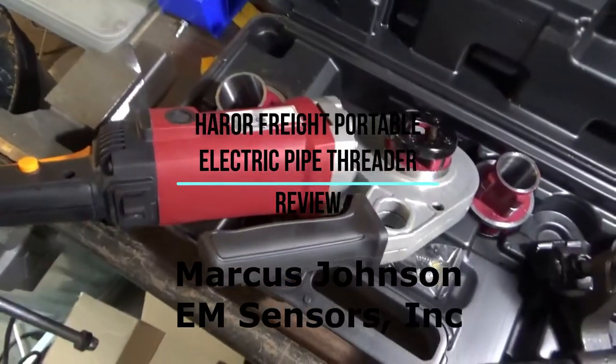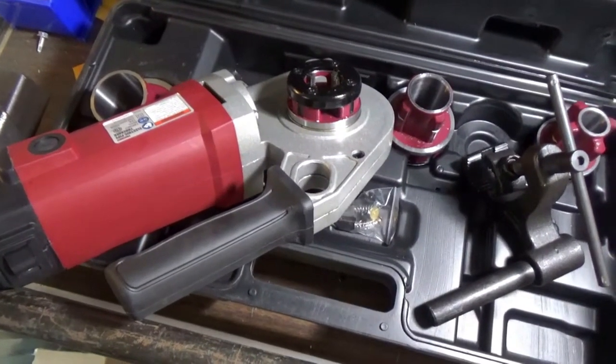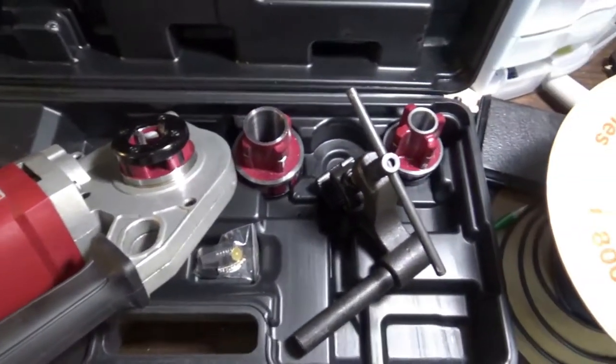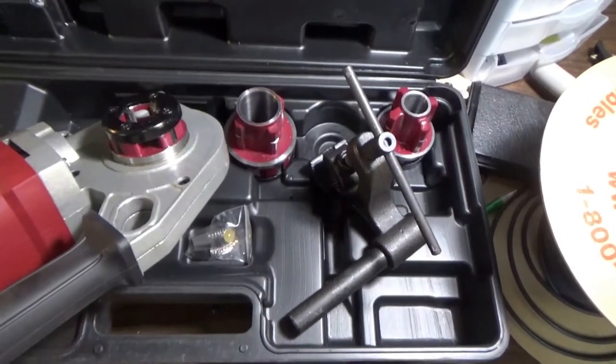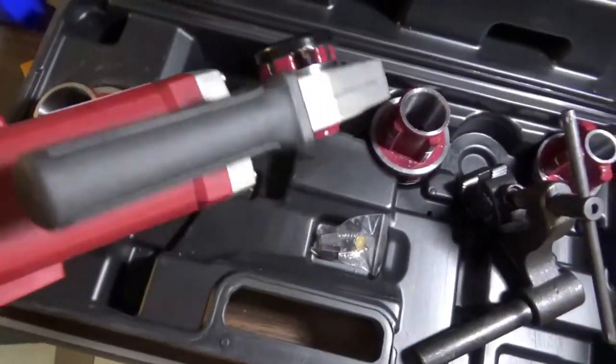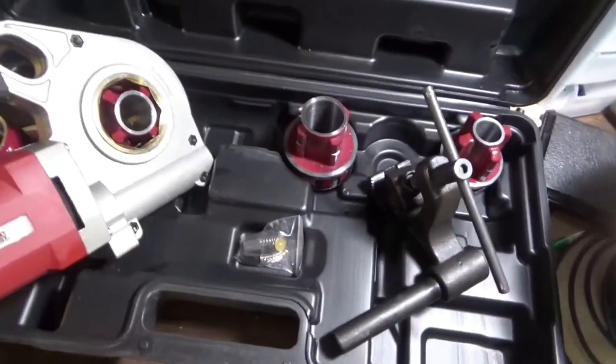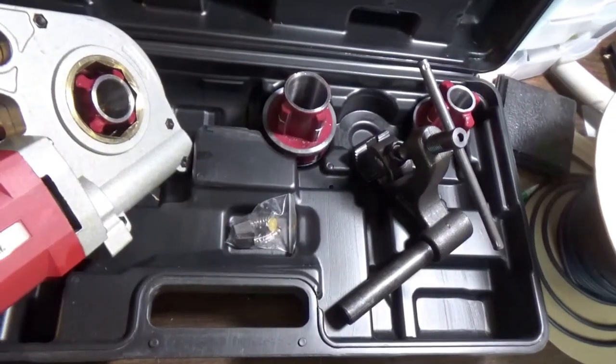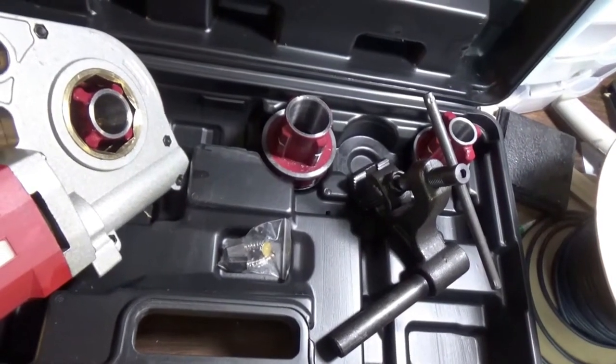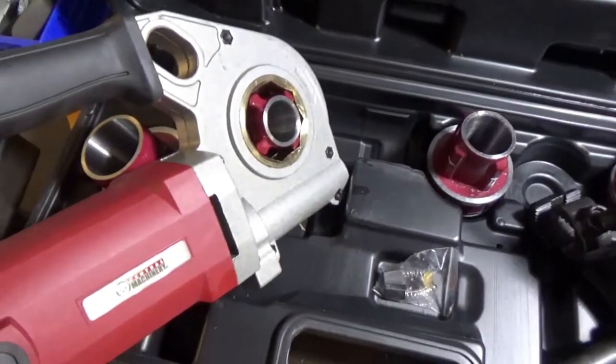This is a review of the electric portable pipe threader purchased from Harbor Freight, branded as Central Machinery. I paid close to $200 for it, but you can pay anywhere from $150 to $400 for this same equipment. I was a little bit nervous about buying this because it's pretty cheap and there's a lot of stress involved, and the reviews aren't great, but for that price I figured I would give it a try.